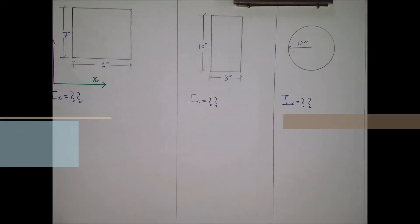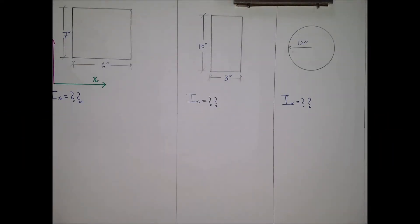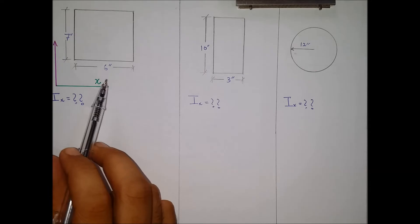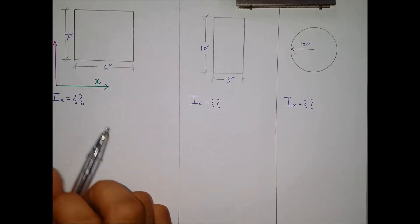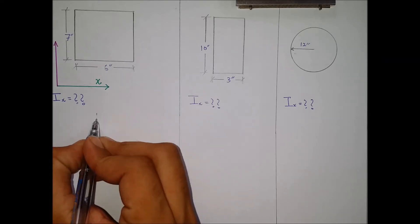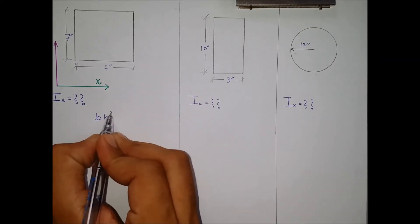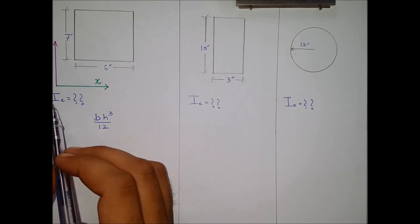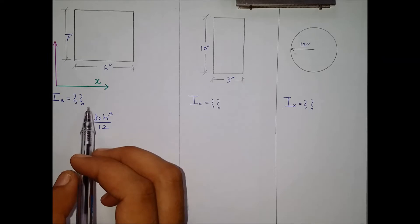In this video we will discuss moment of inertia examples. Let's begin with example number one. It is a rectangle with dimensions 6 by 7 inches. We know that for a rectangle, the formula of moment of inertia is bh³ over 12. We are interested in finding out moment of inertia about the x-axis.